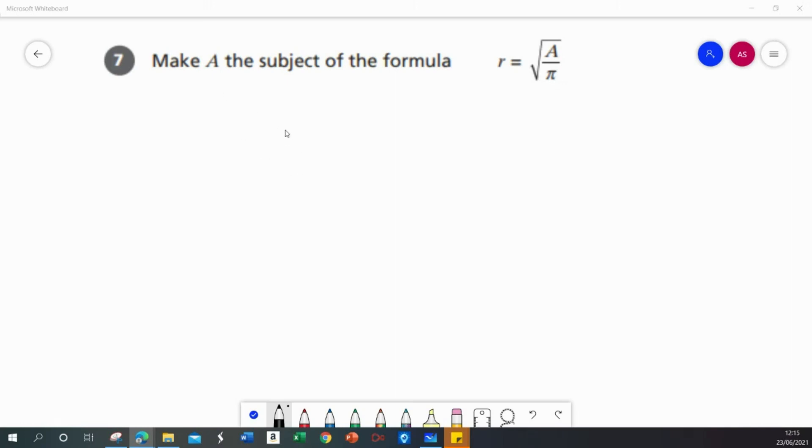This question asks us to make a the subject of the formula r equals the square root of a over pi. We're going to use inverse operations to solve this.